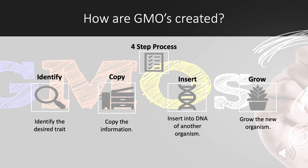Step three is insert. Scientists will then use lab equipment to insert the gene they just copied into the DNA of the plant they want to modify. The new trait does not change any existing traits in the plant.